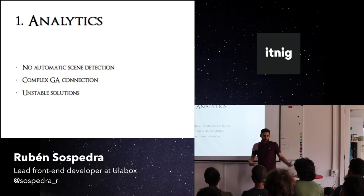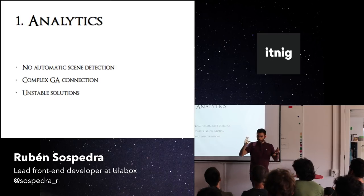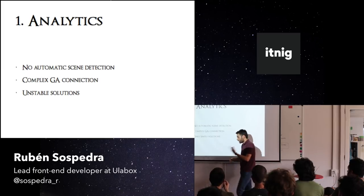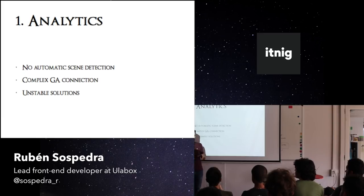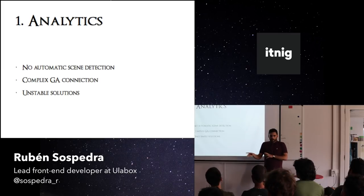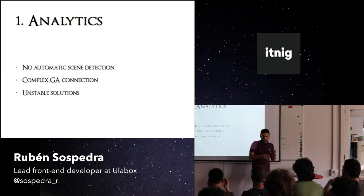We all come from web environments and are used to automatic scene detection — what we call a scene, like a page. But you don't have a URL in a mobile phone. Without a URL, you don't have the protocol, the location, or the history object. Hence, there is no analytics that can auto-track what you are doing and the metadata around these things. Everything is event-based, which is cool — think about Mixpanel, Segment, and that kind of solution. That will be the first thing: you don't have automation.